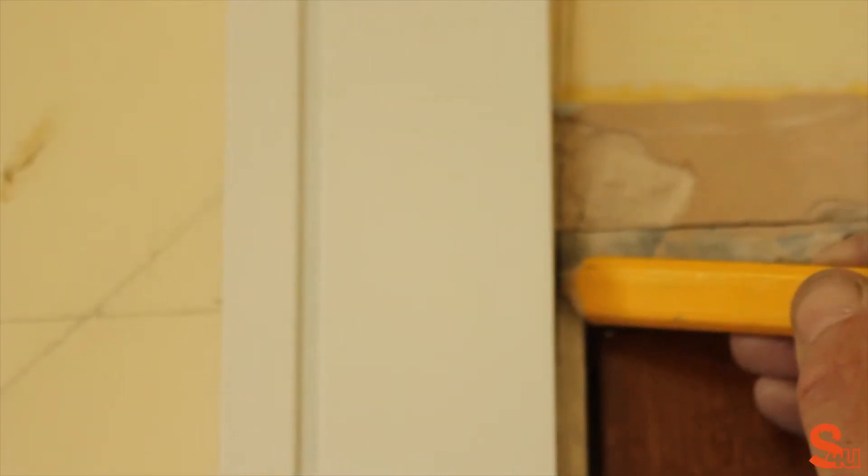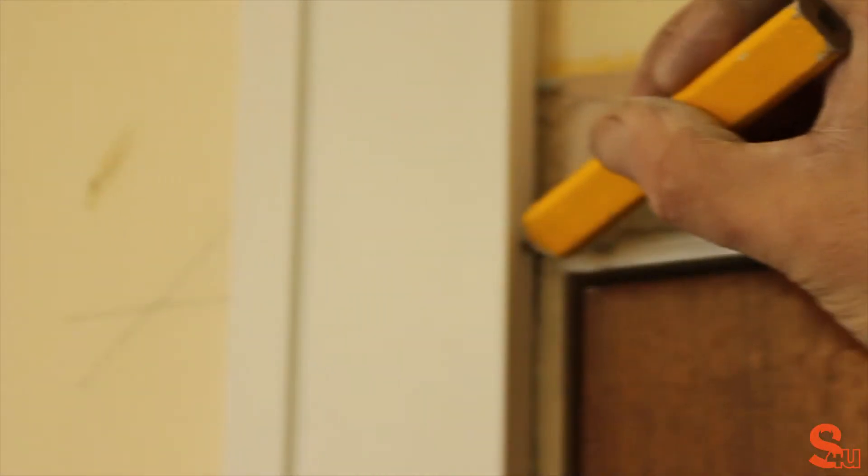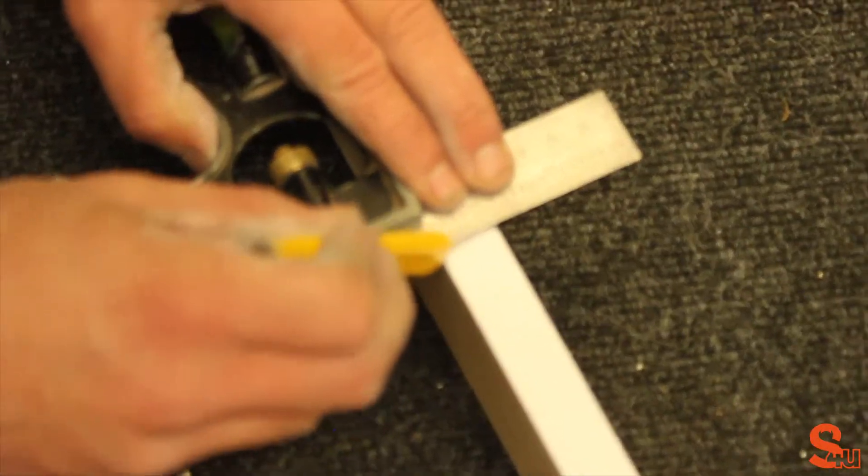Then, using a piece of architrave, put it against the wall along your 5mm lines and mark where it intersects the headpiece. Put that on the side of the board so it's clear. Remove that piece from the wall.